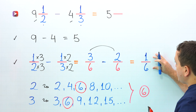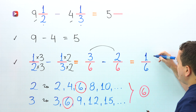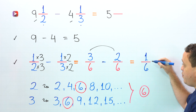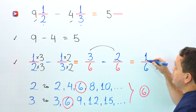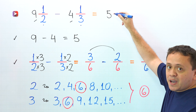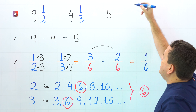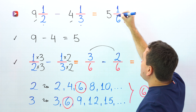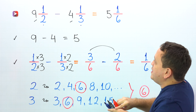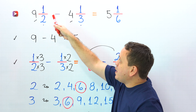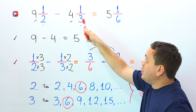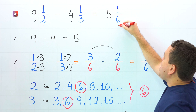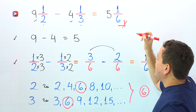The difference of the fractions is 1 sixth. Finally, we add the difference of the fractions to the difference of the whole numbers, so we put 1 sixth next to 5. In that way, 9 and 1 half minus 4 and 1 third gives us 5 and 1 sixth.